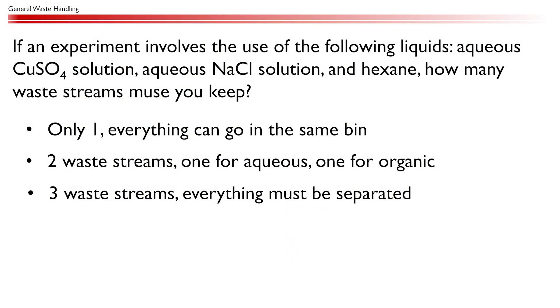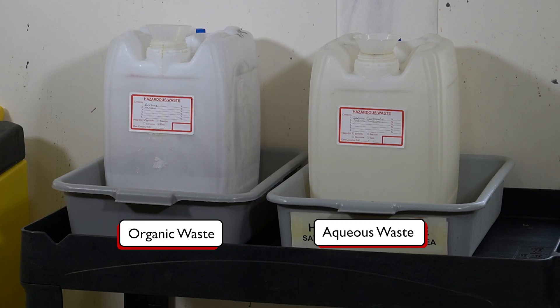If an experiment involves the use of the following liquids: aqueous copper sulfate solution, aqueous sodium chloride solution, and hexane, how many waste streams must you keep? The answer is two waste streams. Aqueous copper sulfate and sodium chloride solution can be disposed of together in the aqueous waste. However, hexane, an organic solvent, should be disposed of separately in the organic waste.